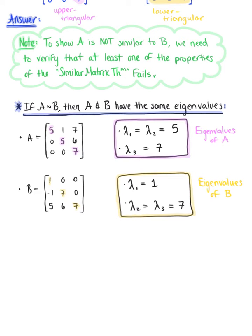So looking at the eigenvalues of matrix A and matrix B, we can see that they're certainly not equal. So we can conclude that, therefore, since matrix A and matrix B have different eigenvalues, this lets us know that matrix A is not similar to matrix B.